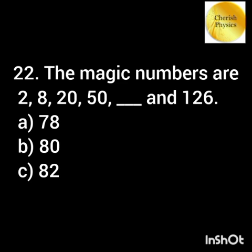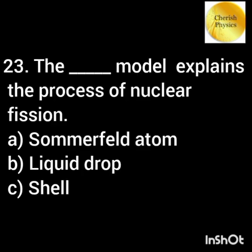The magic numbers are 2, 8, 20, 50, 82, and 126. Which model explains the process of nuclear fission? The liquid drop model explains the process of nuclear fission.